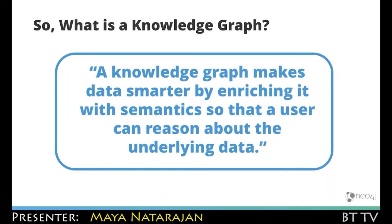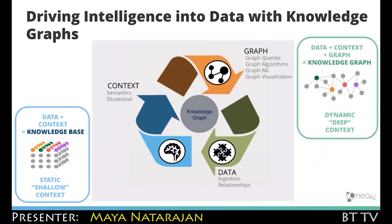Our definition of a knowledge graph is one that makes data smarter by enriching it with semantics so that a user can reason about the underlying data. Data plus context gives you knowledge. If you have knowledge and you put it into a flat structure like a relational database, you get back that same knowledge.